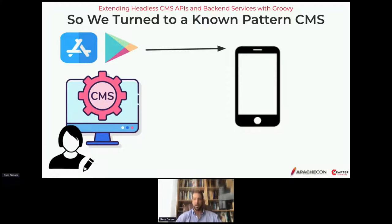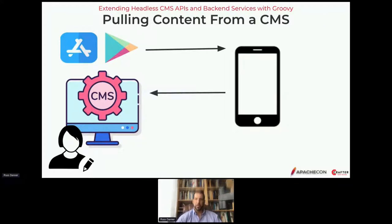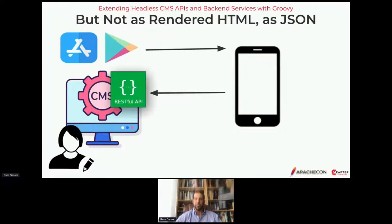As a result, a whole new simplified class of headless CMS systems showed up in the market to fill that need. This architecture pulls content updates from the CMS in real time and enables business users to update content without requiring the user to download anything. Unlike a traditional CMS, because the application has its own native user interface, these applications were able to pull content in a presentationless format — typically as JSON — and take on the responsibility of rendering the user interface.